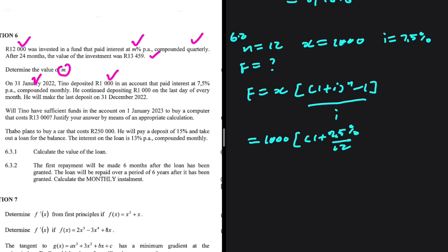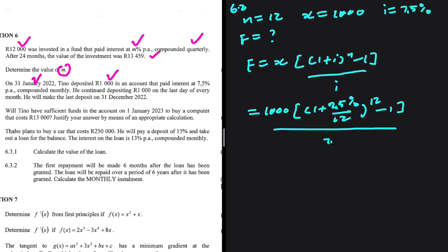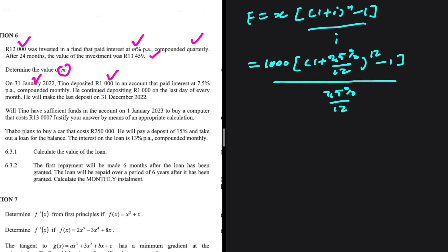Substituting: x = 1,000, interest = 7.5% ÷ 12 because it is compounded monthly, n = 12. The result from the calculator is R12,421.22, which is less than 13,000.